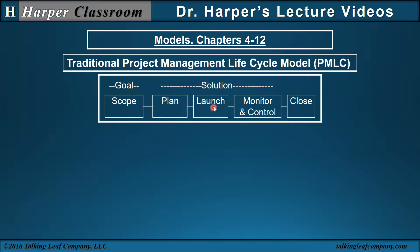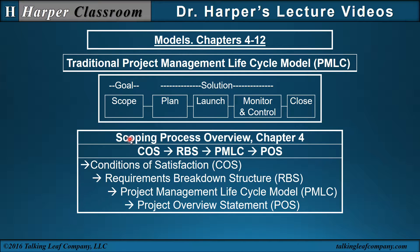He develops the content in each one of these phases, which is a little different than PM Bakken. For example, in scope, the scoping process overview in Chapter 4 starts with the COS — conditions of satisfaction — which define the necessary elements of project success. Then the requirements breakdown structure lists the details of the requirements that describe the conditions of satisfaction. And then the project overview statement, which can be described as an executive summary of this information, is similar to a summary of the scope statement and the charter in PM Bakken.